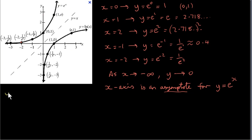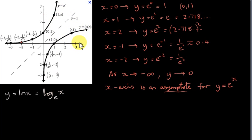Now let's look at the function y equals ln of x. ln of x means log to the base e of x. 'ln' stands for logarithmus naturalis — natural logarithm. They're called natural logarithms because they arise so often in mathematics, and because both y equals e to the x and y equals ln of x are used to model things like population growth, natural phenomena, and radioactive decay. If y equals log to the base e of x, then e to the power of y must equal x — that's just the definition of the log function.